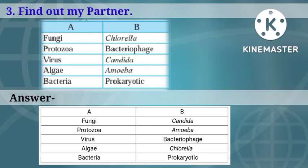Next question: find out my partner. The answer is — Fungi's partner is Candida; Protozoa's partner is Amoeba; Virus's partner is Bacteriophage; Algae's partner is Chlorella; and Bacteria's partner is Prokaryotic.